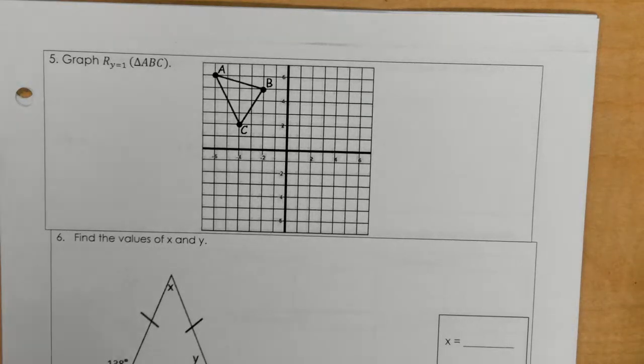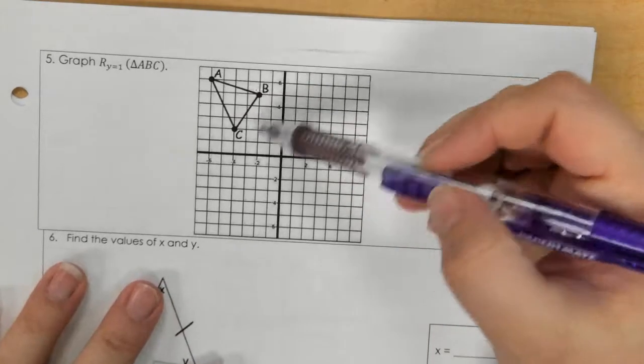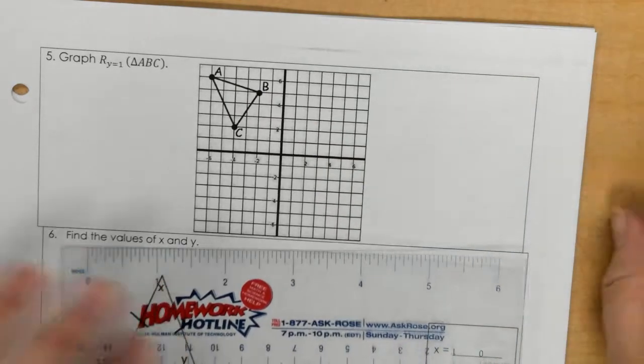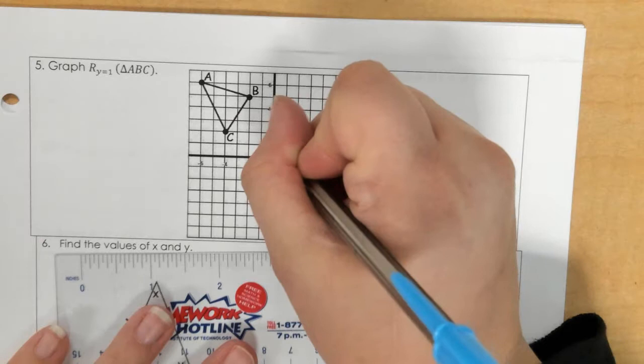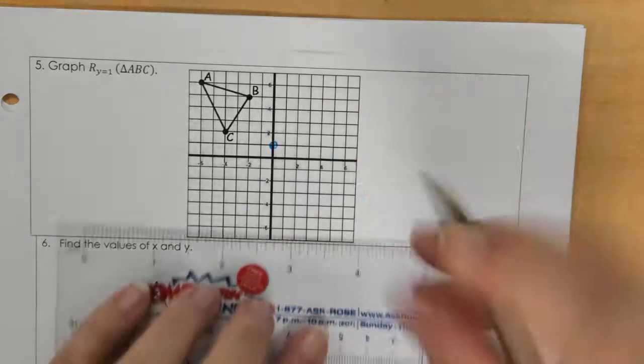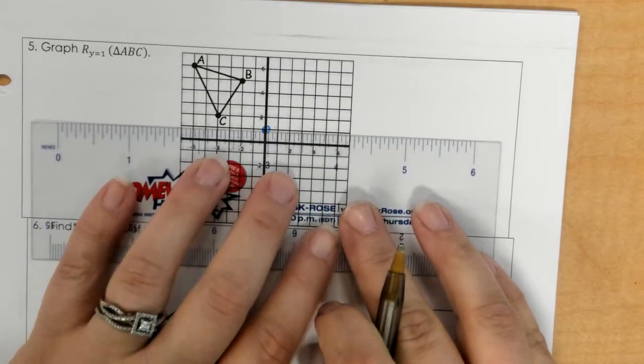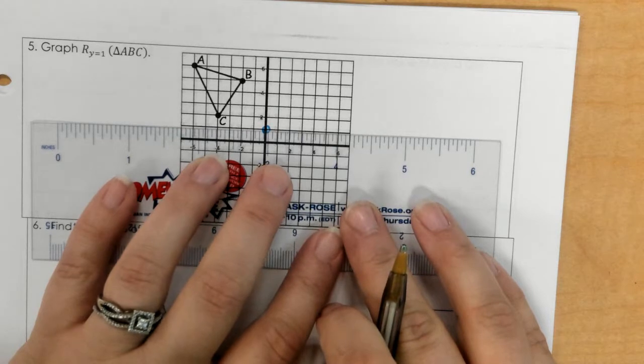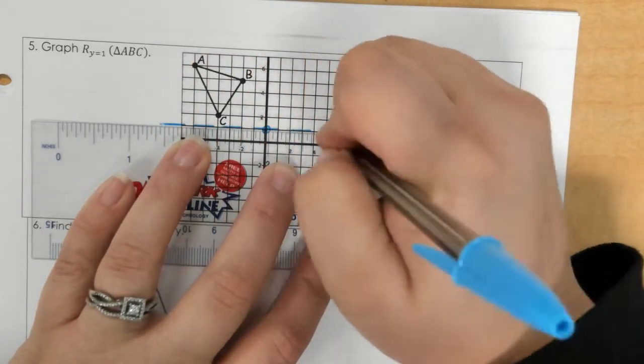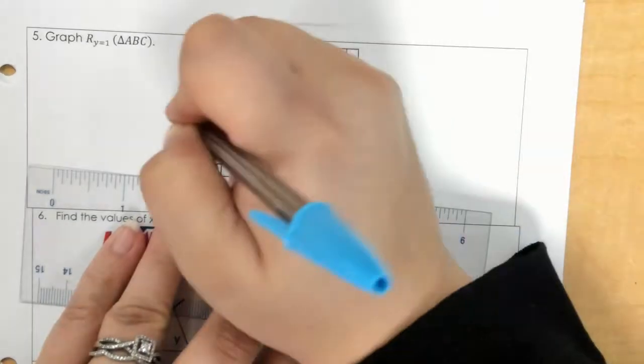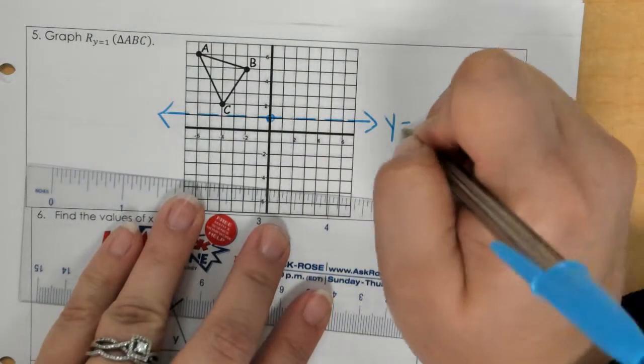For number 5, it says that we need to reflect this triangle over y equals 1. So on the y-axis, we go to the 1, and I'm going to draw a dashed line right through there.